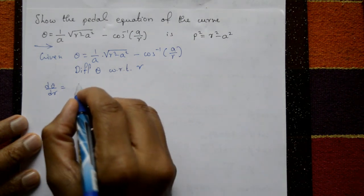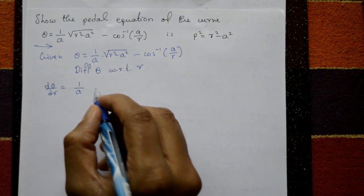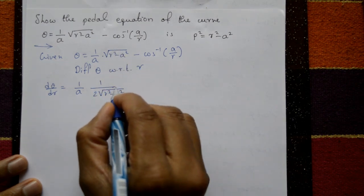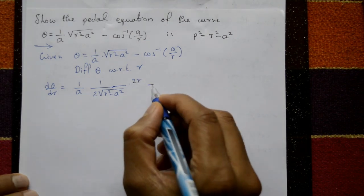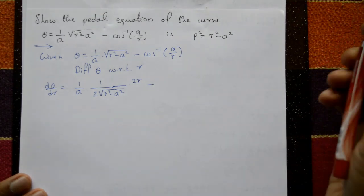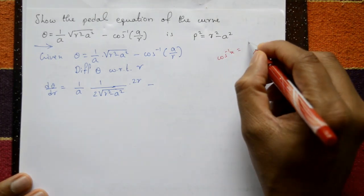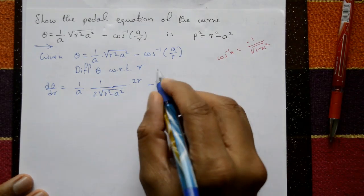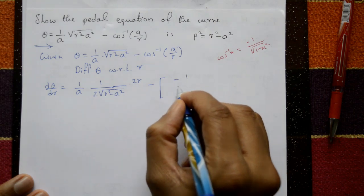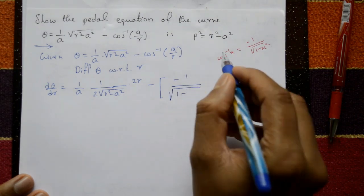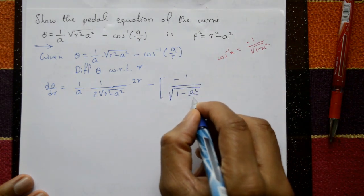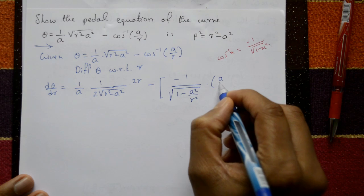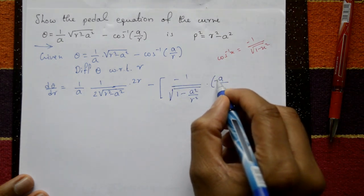dθ/dr: (1/a) is a constant. Differentiating √(r² - a²) gives (1/2)·(1/√(r² - a²))·2r. For the cos⁻¹ term, using the formula d/dx[cos⁻¹x] = -1/√(1 - x²), with x = a/r, differentiating (1/r) gives -1/r².